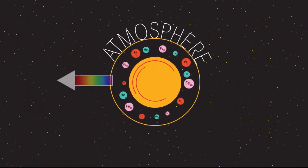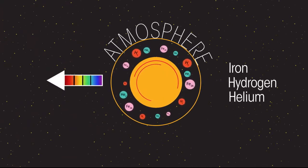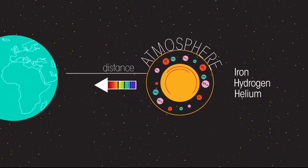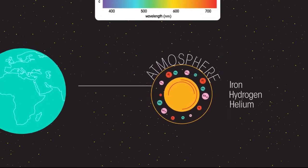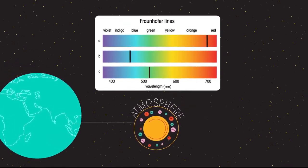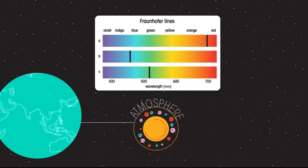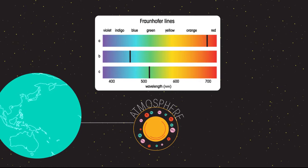The atoms of elements that are in the atmosphere of a star absorb specific wavelengths of light. This can tell us the chemical makeup of the star as well as its relative distance from the earth. We can see the absorption of these different wavelengths when looking at the light spectrum of a star, also known as Fraunhofer lines. The black lines show us where light is being absorbed. We can tell the exact wavelength of light being absorbed.